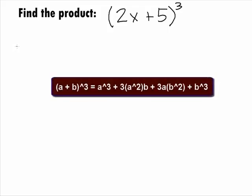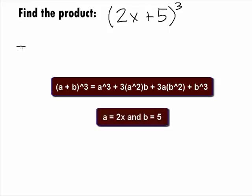There is a special product rule for a binomial cubed. If we have a plus b quantity cubed, it is the same as a cubed plus 3a squared b plus 3ab squared plus b cubed. We can use this to find the product on this problem.